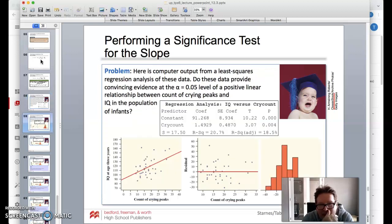Here's the computer output from a least squares regression analysis. Do these data provide convincing evidence at the 5% significance level of a positive linear relationship between count of crying peaks and IQ? Okay, let's see what happens here.